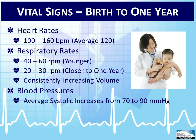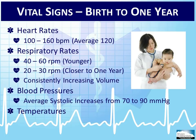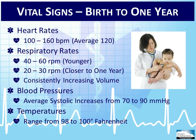Obtaining blood pressures in an infant or toddler under three is difficult, and children tend to compensate so well during a crisis that if we see drastic blood pressure changes, it is usually because the child is in grave distress. An EMT can appropriately care for an infant by assessing and reporting PAT findings along with heart and respiratory rates. Temperature during this age range tends to be from 98 to 100 degrees Fahrenheit. Be sure to follow your local protocols regarding obtaining a temperature in an infant patient.